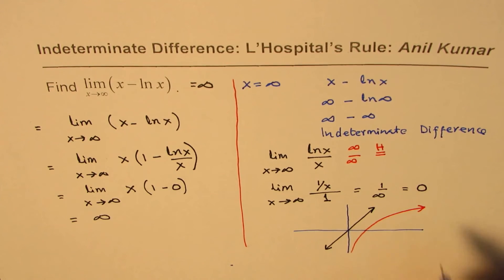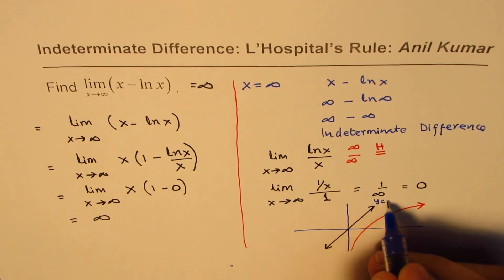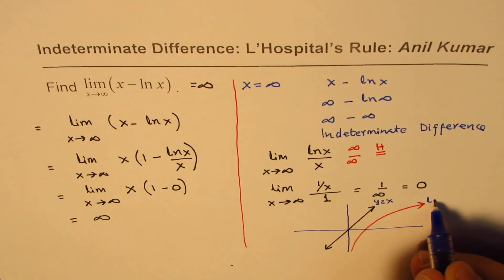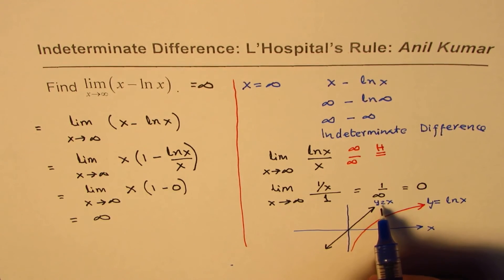So what we see here is that we have these two functions. This is, let's say, y equals x and this one is y equals ln x.